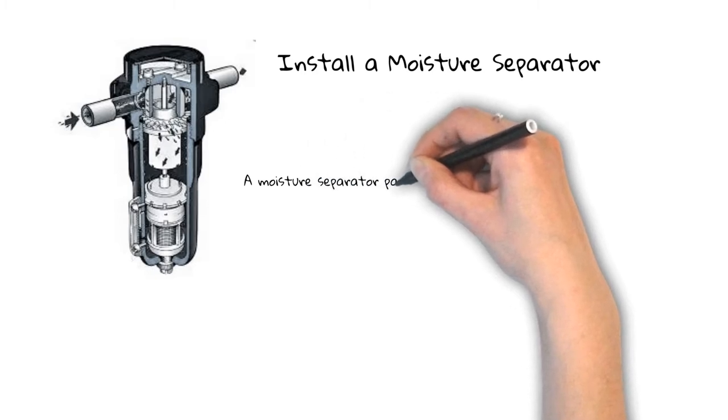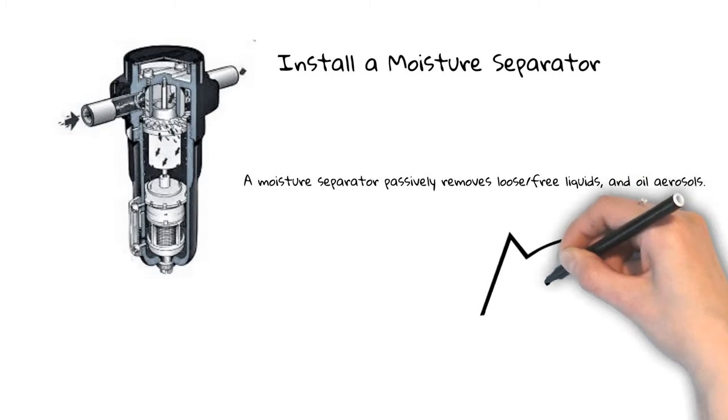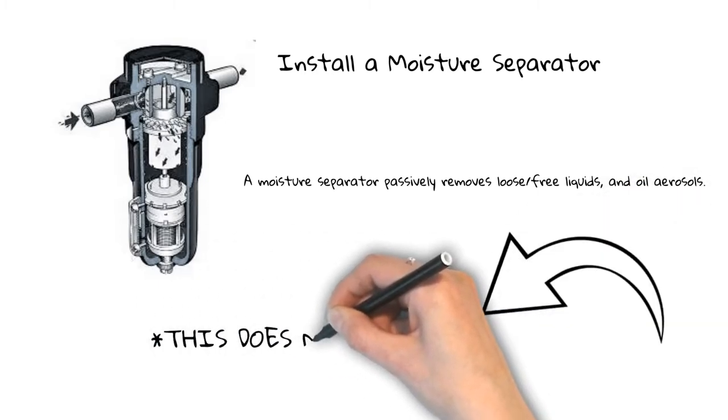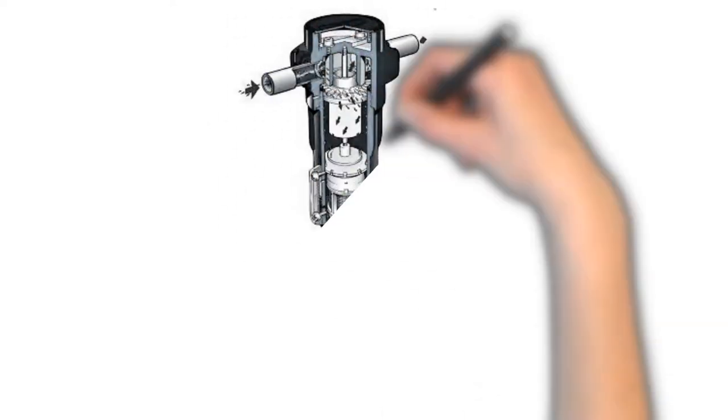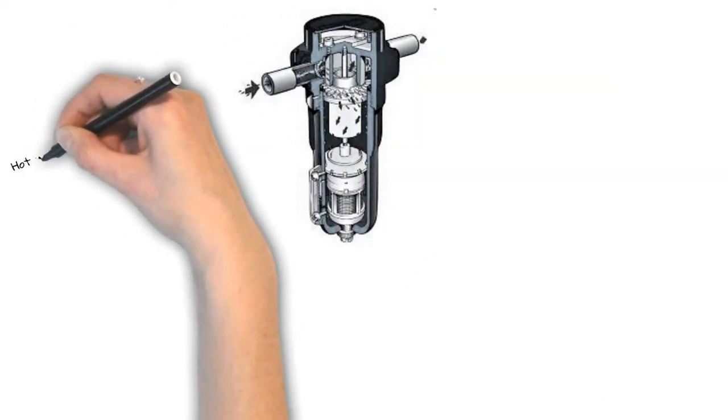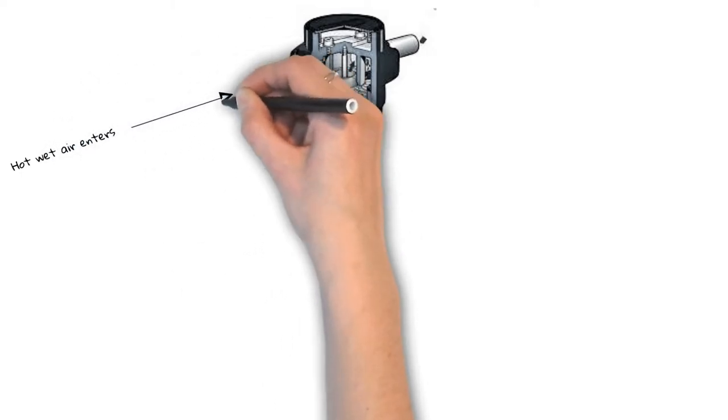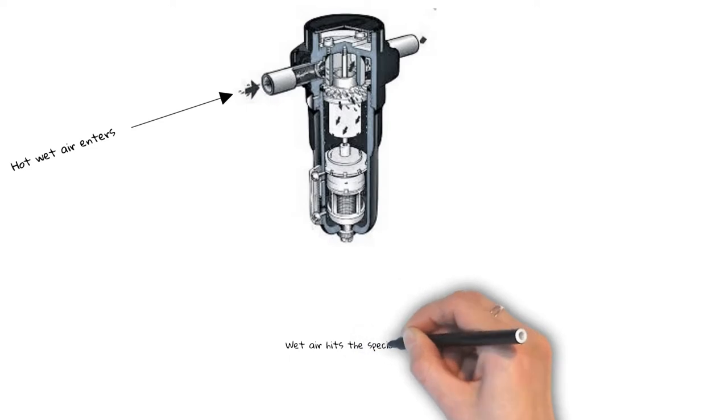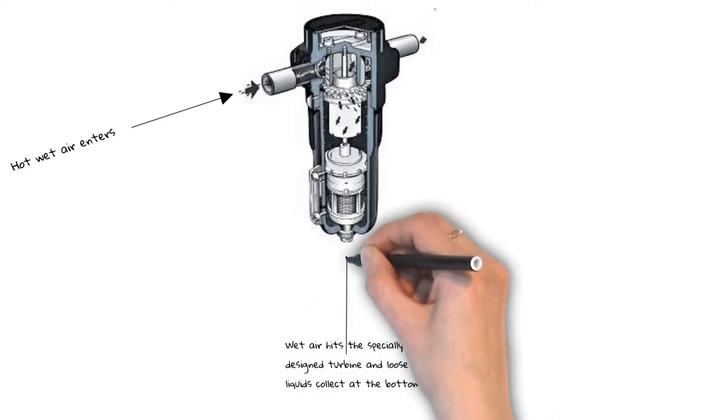A moisture separator passively removes loose, free liquids and oil aerosols. It is important to remember that this does not dry your air. As hot, wet air enters, it hits our specially designed turbine and loose bulk liquids fall to the bottom of the bowl.